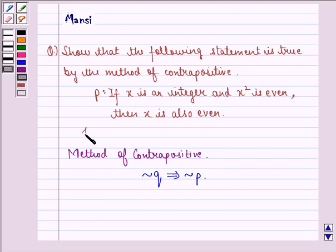Thus we show the given statement to be true. This is our key idea for the question. Now, let us start with the solution. The statement given is P, that is, if x is an integer and x square is even, then x is also even.